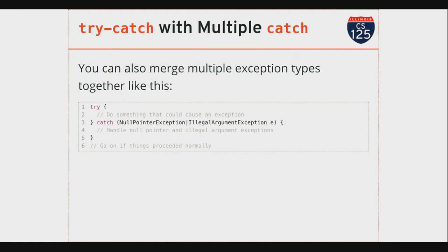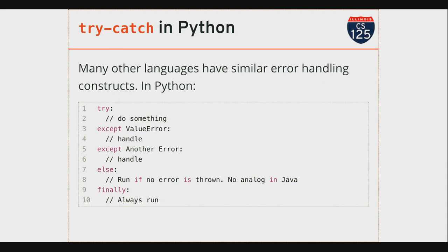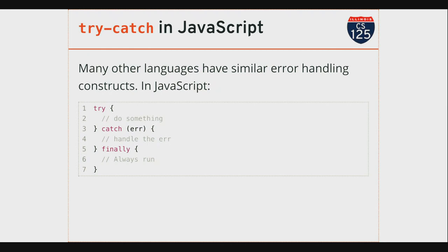There is syntax for handling multiple types of exceptions in one catch statement — you put a pipe between them. So this catch statement will handle either a NullPointerException or an IllegalArgumentException. You can chain multiple of these together. Try-catch is not an unusual control structure — you're going to see this in other languages. Python has it, JavaScript has it, C++ has it. JavaScript also has a 'finally' block, which is code that's always run — Java also has that actually.